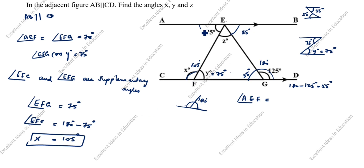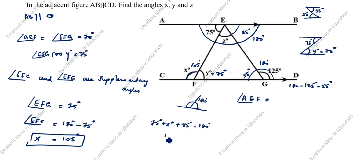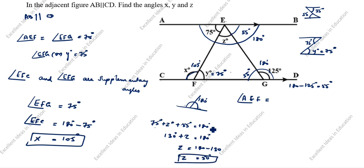This whole thing is 180 degrees — a straight angle. So 75 degrees plus Z degrees plus 55 degrees equals 180 degrees. 75 plus 55 is 130 degrees, so Z equals 180 minus 130, which gives Z equal to 50 degrees.